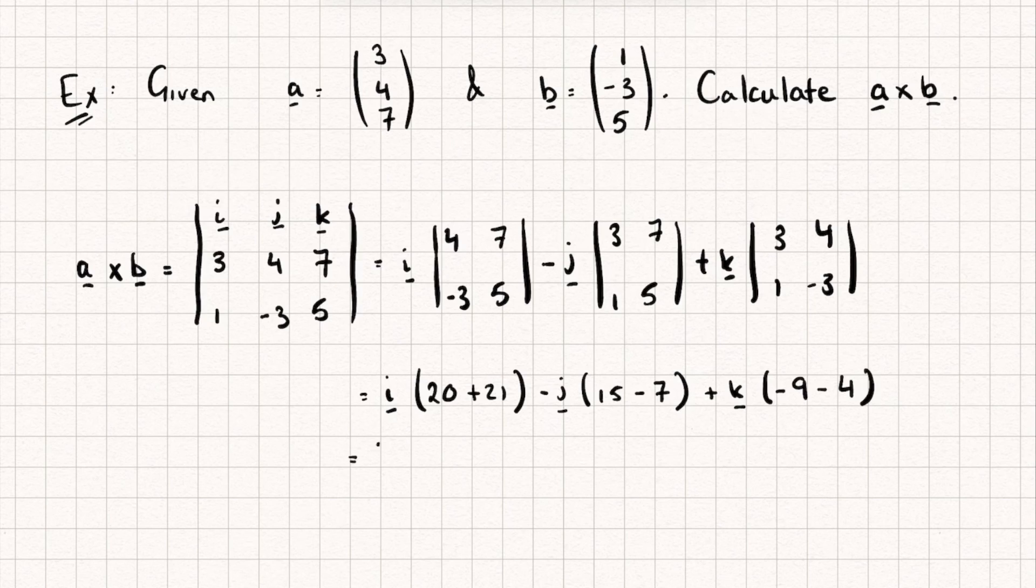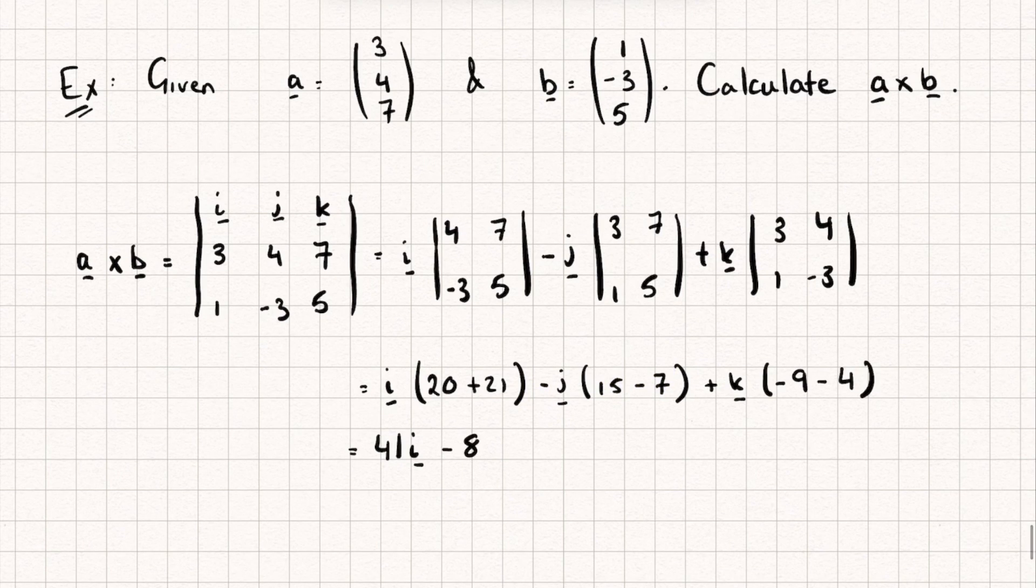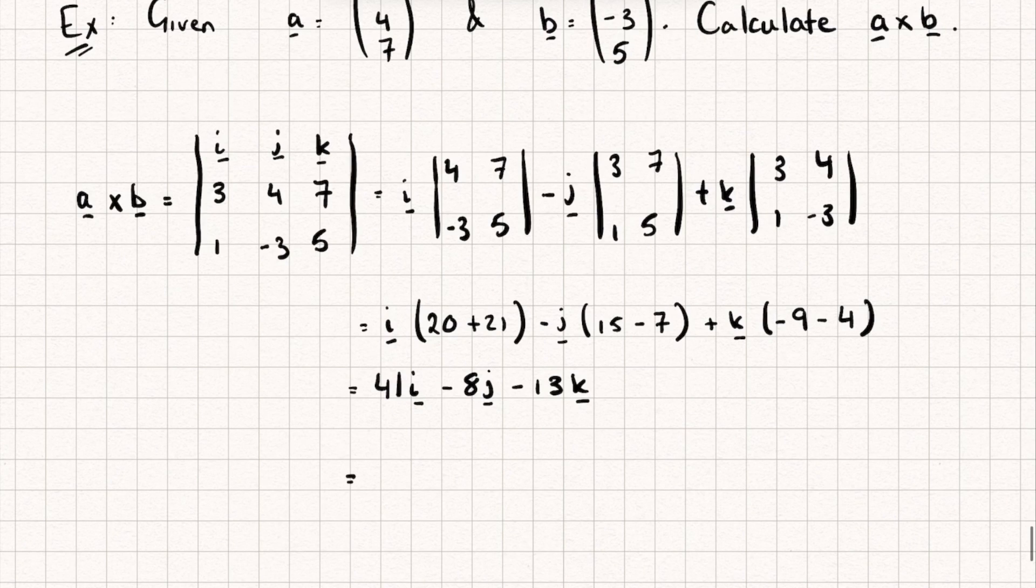So we're going to get 41i. Then what is inside this bracket here? Well that's going to become 8, but it's going to be -8 because I'm distributing that negative, so it's -(-8)j. And then finally -13k. So we could actually write a cross b as the following vector: (41, -8, -13).